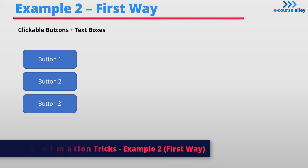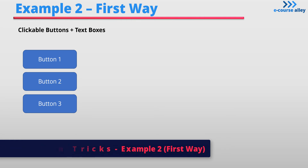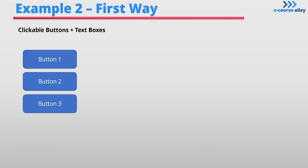In this second example, we will create clickable buttons in PowerPoint and layer in text boxes to go with each button. I'm going to show you two ways to do this in PowerPoint. The first way is using animations and the second way is by adding additional slides to your presentation. This is what the outcome will look like if you create this interaction using animations.